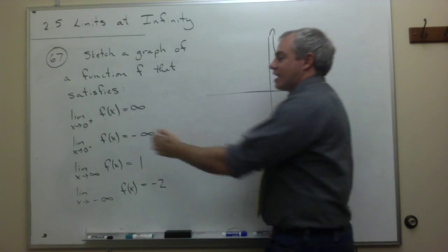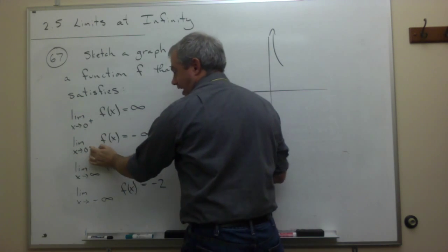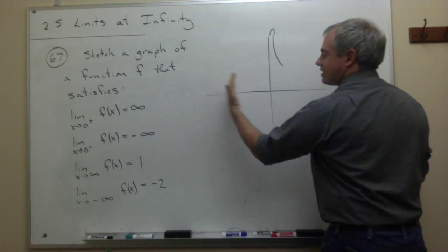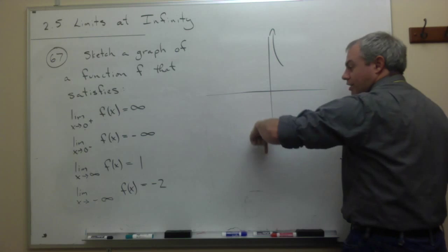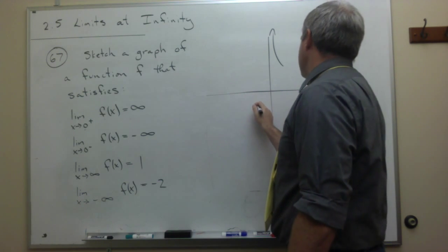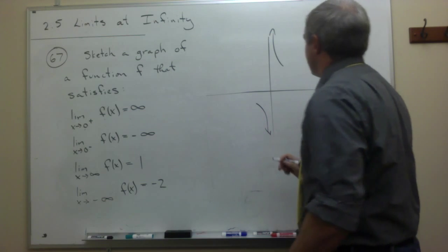It says as I come into zero from the left side of this function, as I come in from the left side, I'm going to negative infinity. So as I come in from the left side, I'm going to negative infinity.